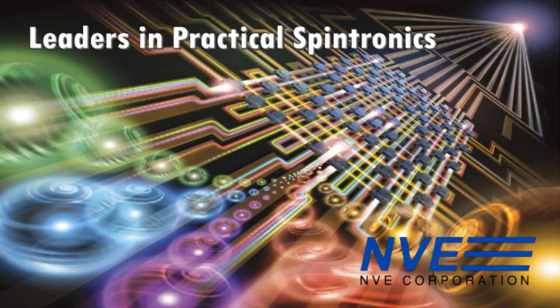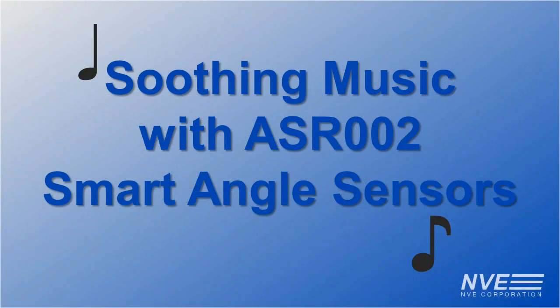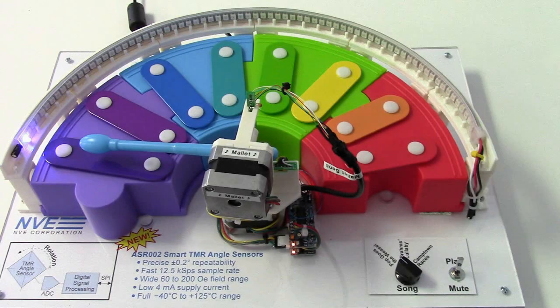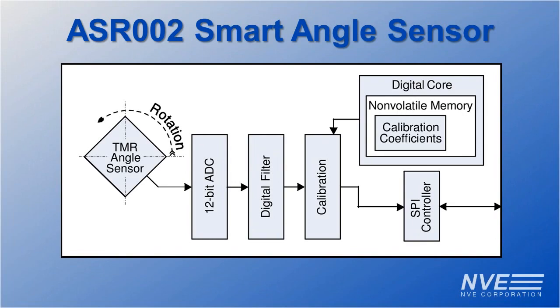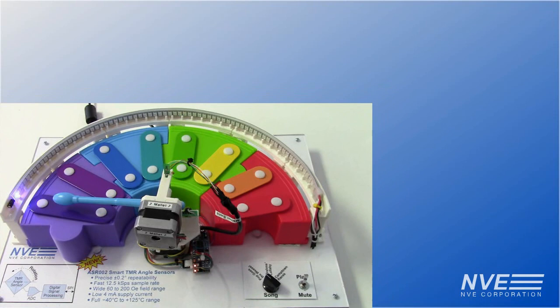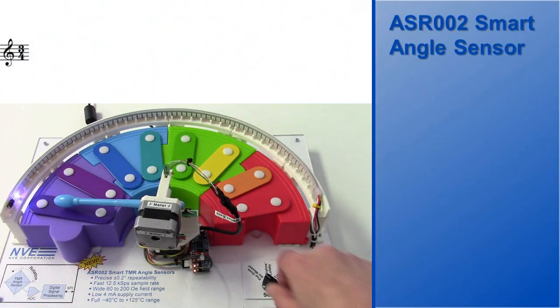Hello, we love mechatronics here at NVE, so we made an automated xylophone using our fast, accurate and simple ASR002 Smart TMR angle sensors. This demo has three different tunes that will be background music while we talk about the new sensors.